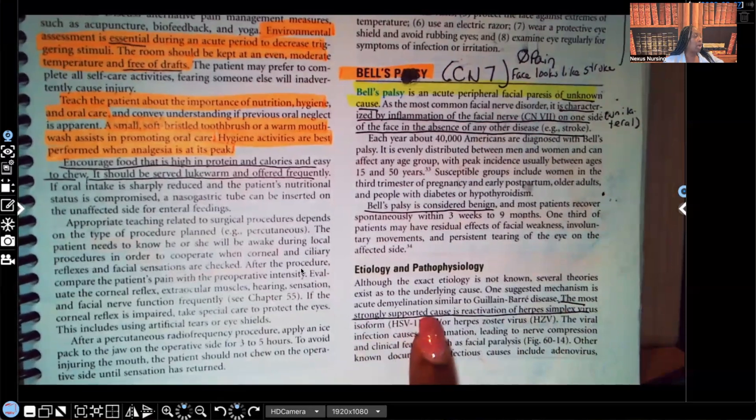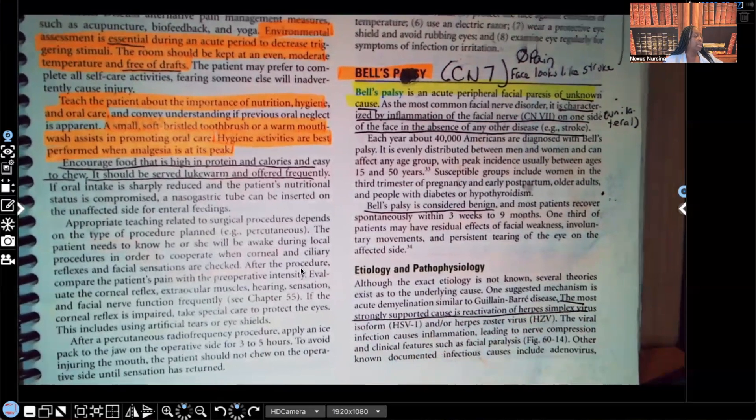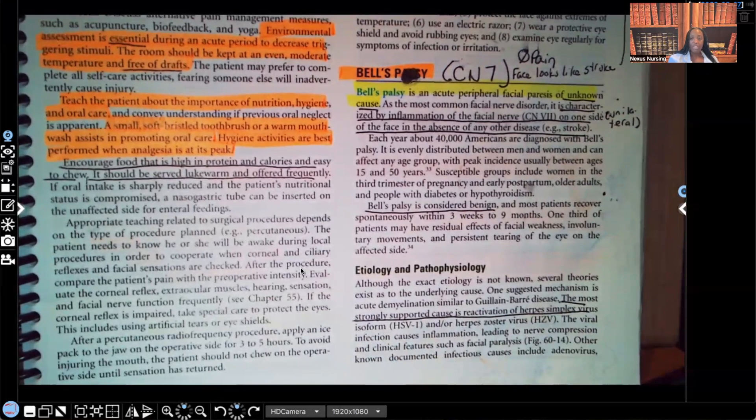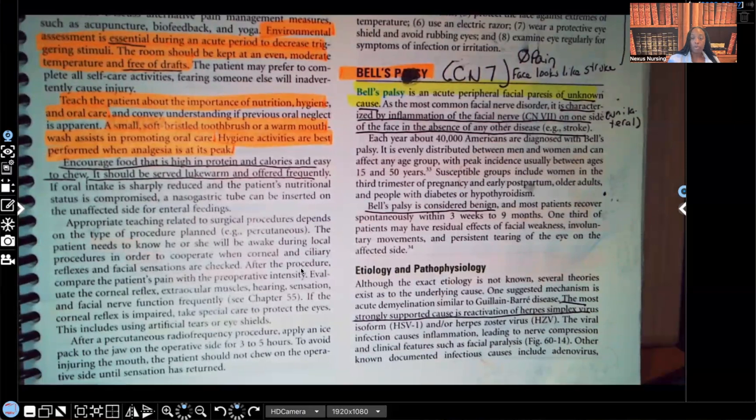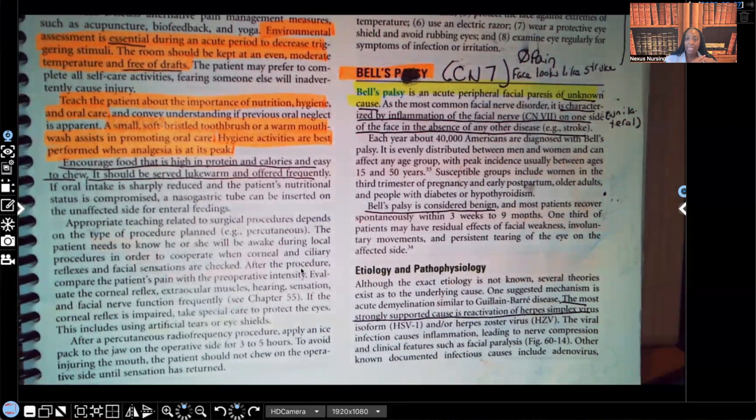Take a look at the etiology and patho. The most strongly supported cause is reactivation of herpes simplex virus. So the patient was infected, and now what happened is it was dormant, and then it became reactivated. That's what the thought is. But we're not 100% sure because we've had patients with Bell's palsy with no history of herpes simplex virus infection. This patient with Bell's palsy, they will look like they had a stroke. You know how the stroke patients will have the unilateral, the one-sided facial drooping, facial weakness. Same thing.